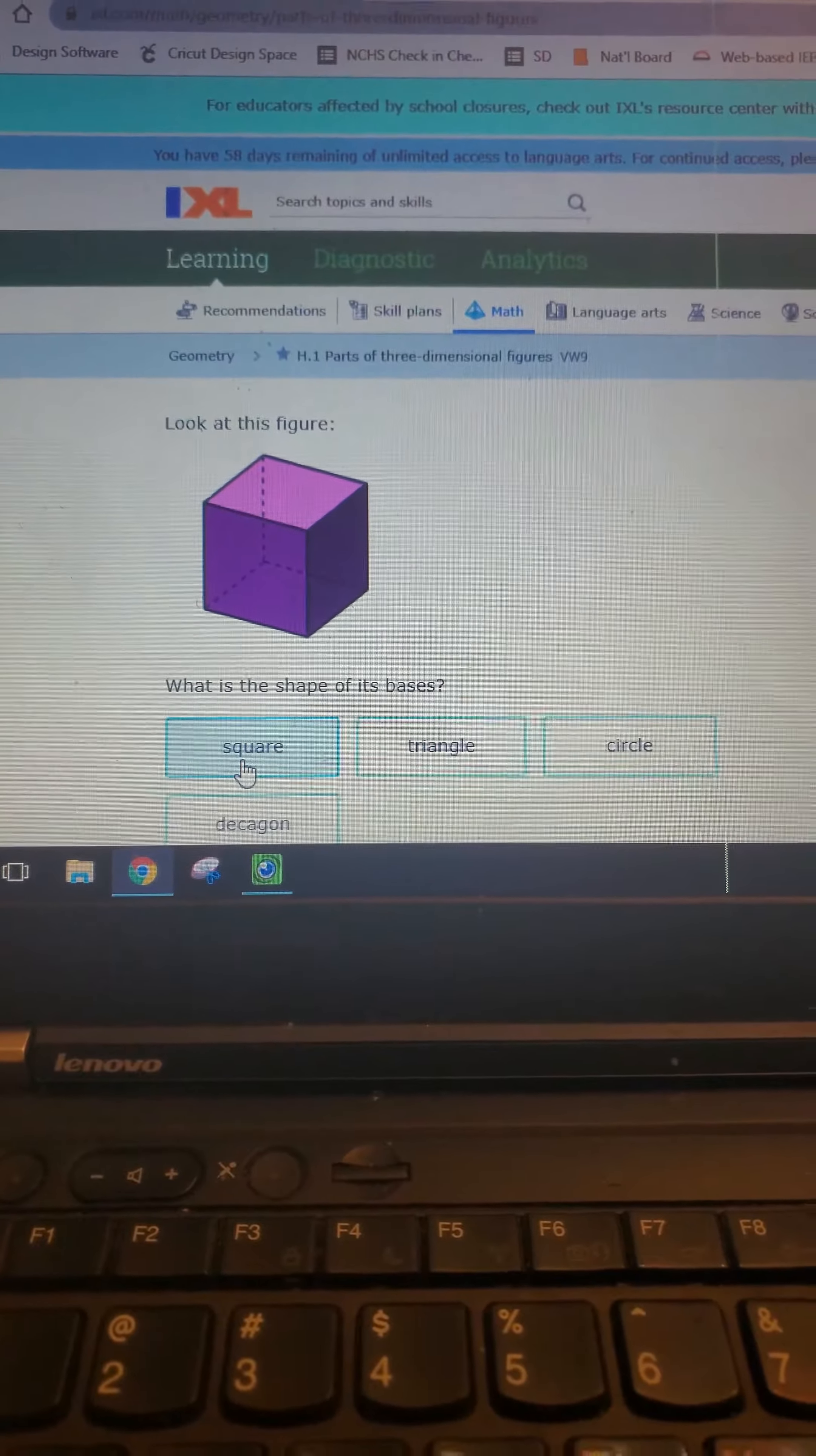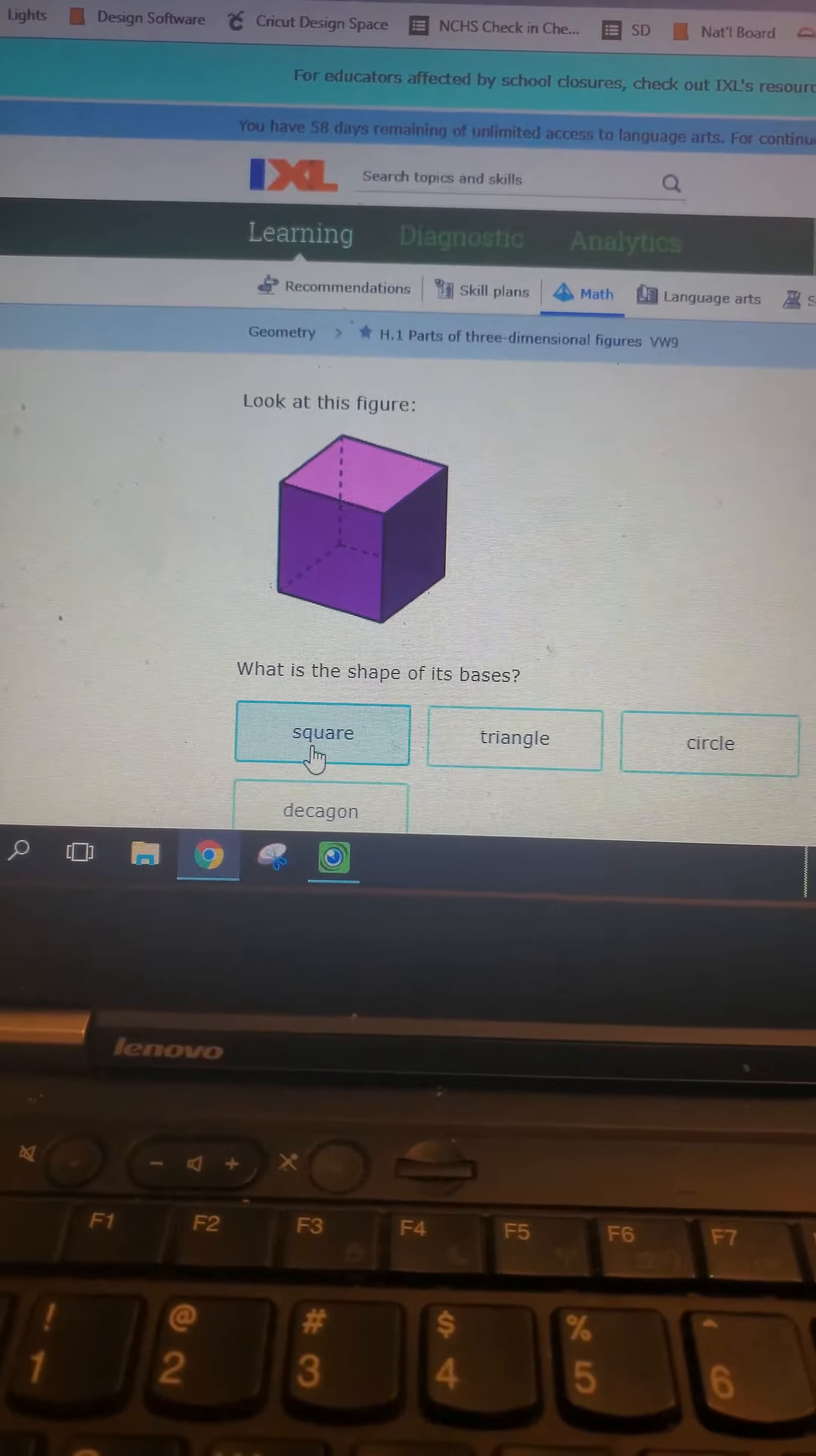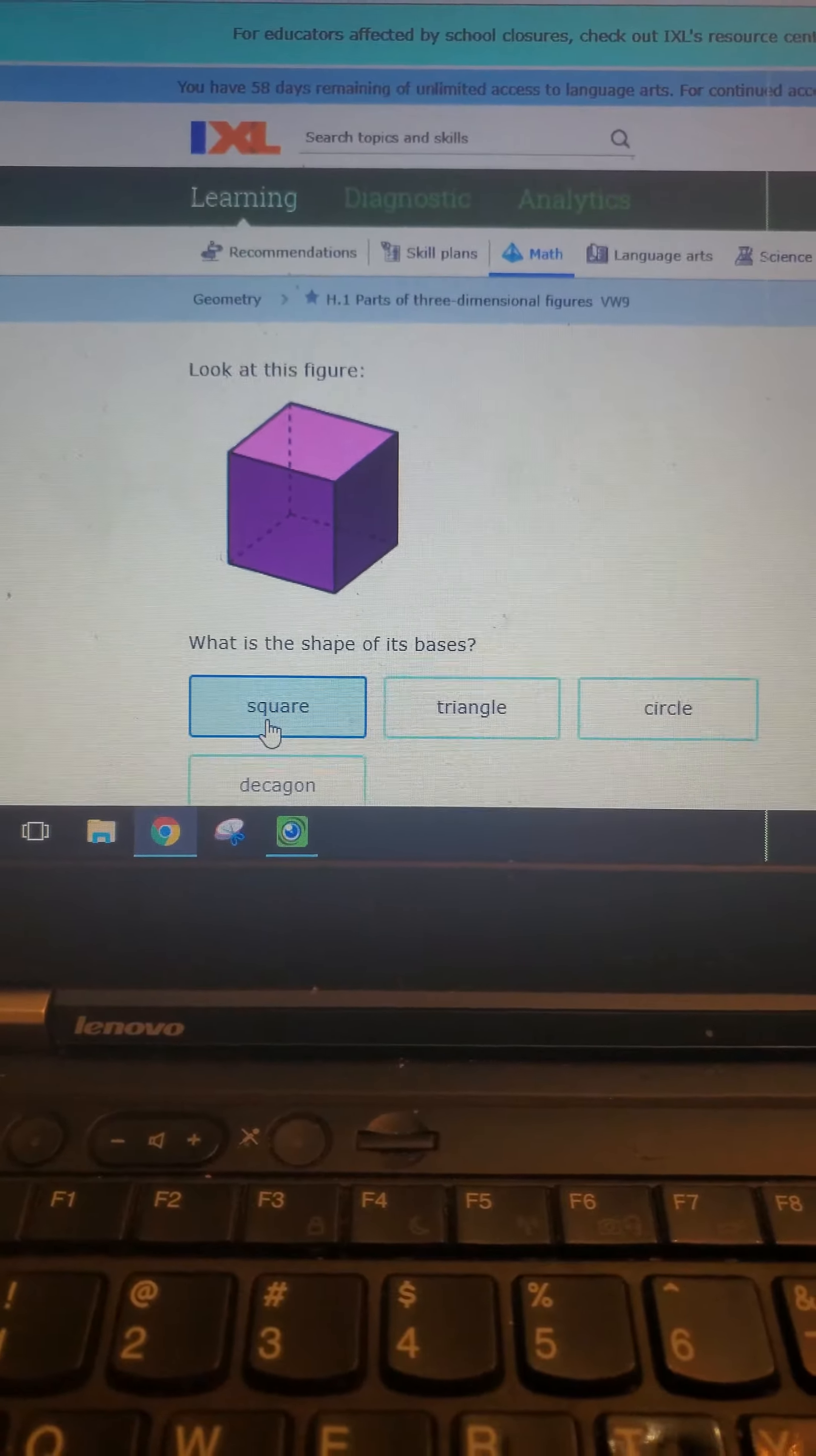Look at this figure. What is the shape of its base? Well, our options are square, triangle, circle, and decagon. Again, it's going to be pretty obvious that all of these are either rectangles or squares while it's sitting on a square. So its base is a square.